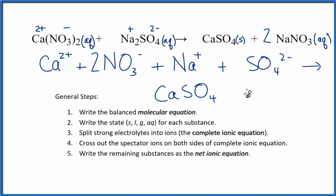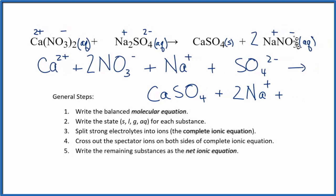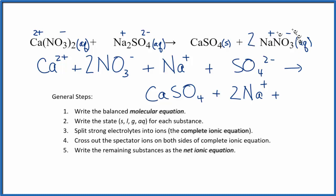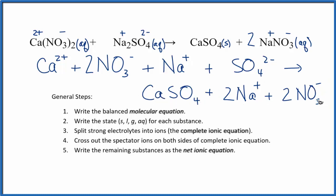Plus, we have, we said sodium was positive, nitrate's negative. 2 Na+, plus, we have 2, it applies to everything here, so 2 of the nitrate ions, 2 NO3−. So these are the products.